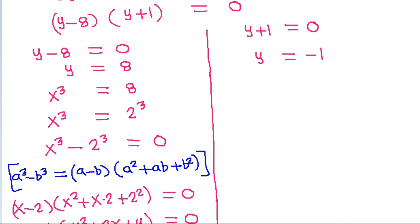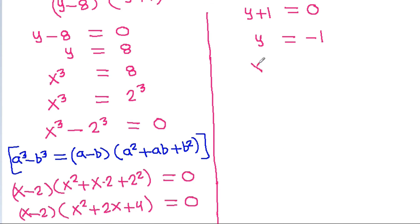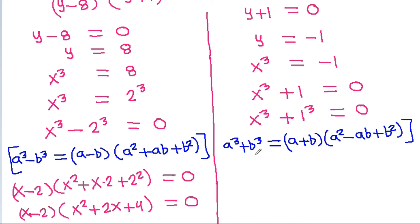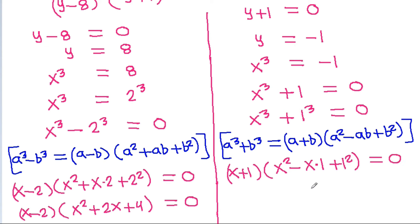For the second case, y equals x cube equals minus 1, so x cube plus 1 equals 0. Using the identity a cube plus b cube equals (a plus b)(a square minus ab plus b square), x cube plus 1 cube gives (x plus 1)(x square minus x plus 1) equals 0.